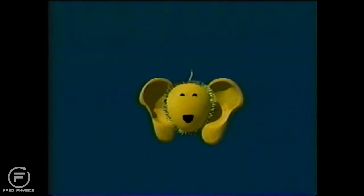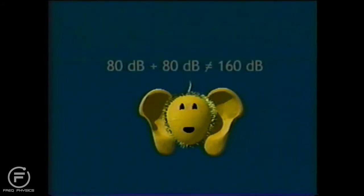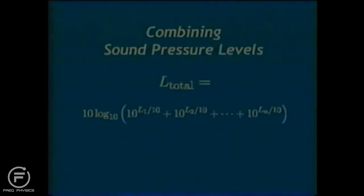The sound pressure level is often represented by a capital L. We will now use L to help explain the combining of sound pressure levels. When you need to add sound pressure levels, it is not a simple matter of algebraically adding the numbers. 80 dB plus 80 dB does not equal 160 dB. As explained earlier in the presentation, the decibel scale is logarithmic. Therefore, to combine decibel values, each must be converted to a linear scale, added, and then converted back to a logarithmic scale. Here, L1, L2, up to Ln represent the n sound levels that are to be combined.